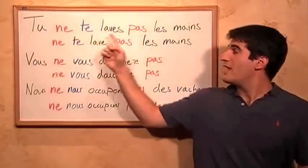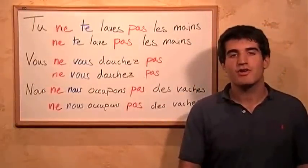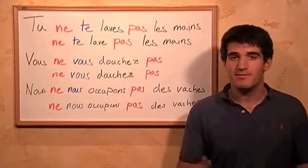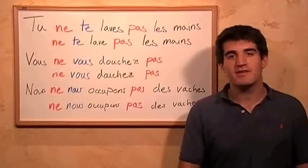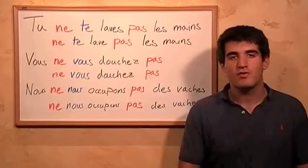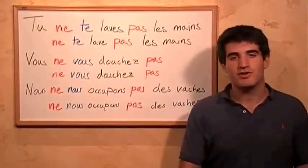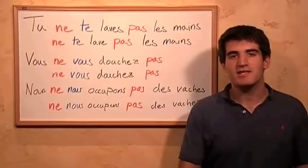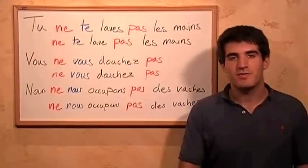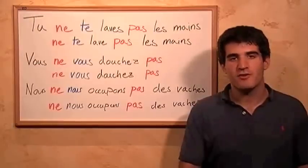Tu ne te laves pas les mains — you don't wash your hands, les mains being your hands, and laver meaning to wash. So if we want to say 'don't wash your hands,' we just take away the tu at the beginning and it becomes ne te laves pas les mains. Don't wash your hands. The only other change here is that the s from lave has disappeared, because we don't write an s for tu for -er verbs like laver.